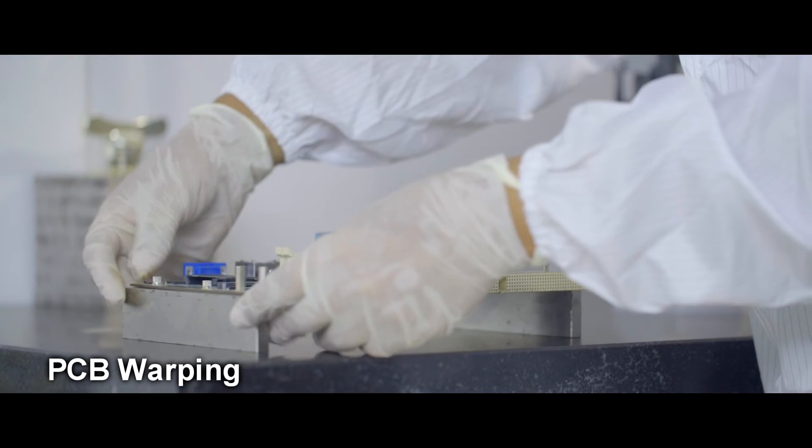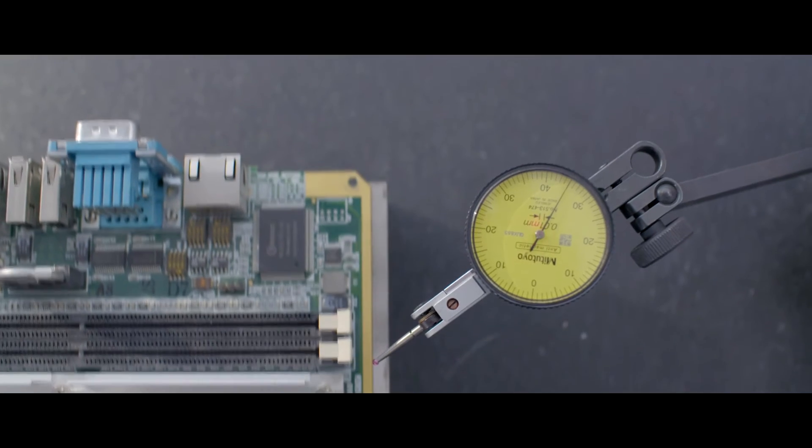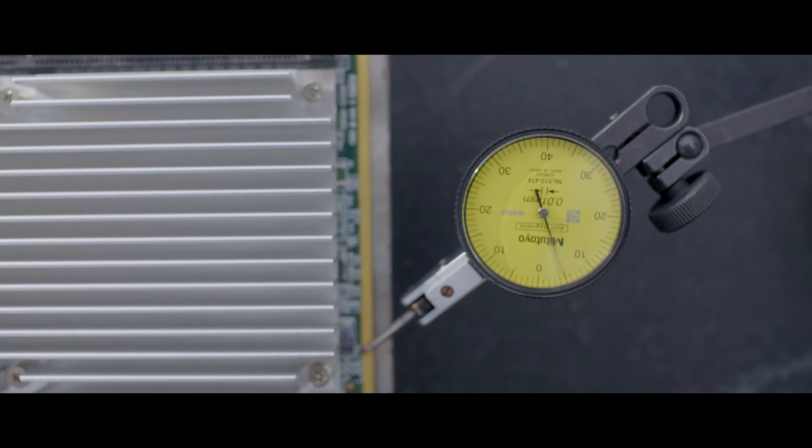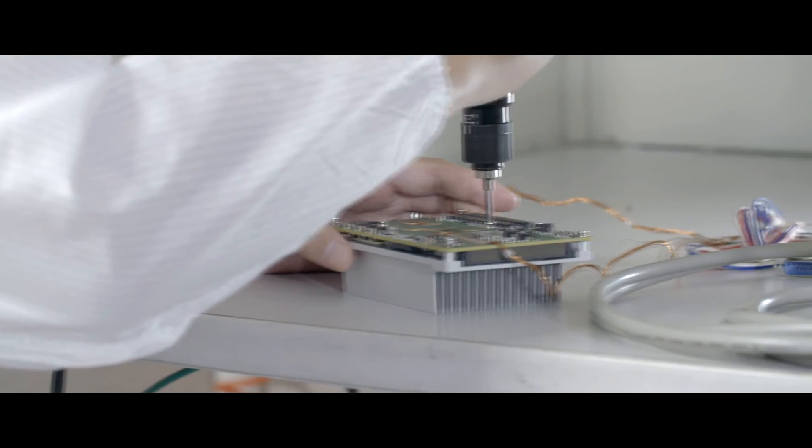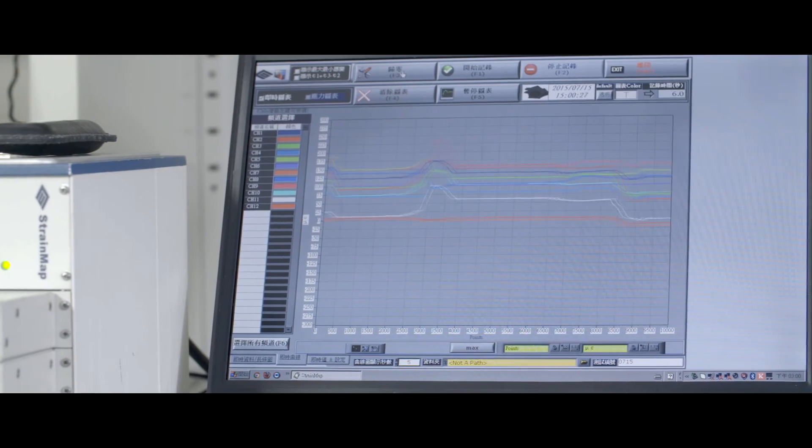PCB warping, a result of the SMT process, is measured by precision table and instrumentation to verify that warping is within allowed tolerance. Stress from pressure on a chip must be evenly distributed over all solder balls, and strain gauges on the board verify that variations are within allowable tolerance.